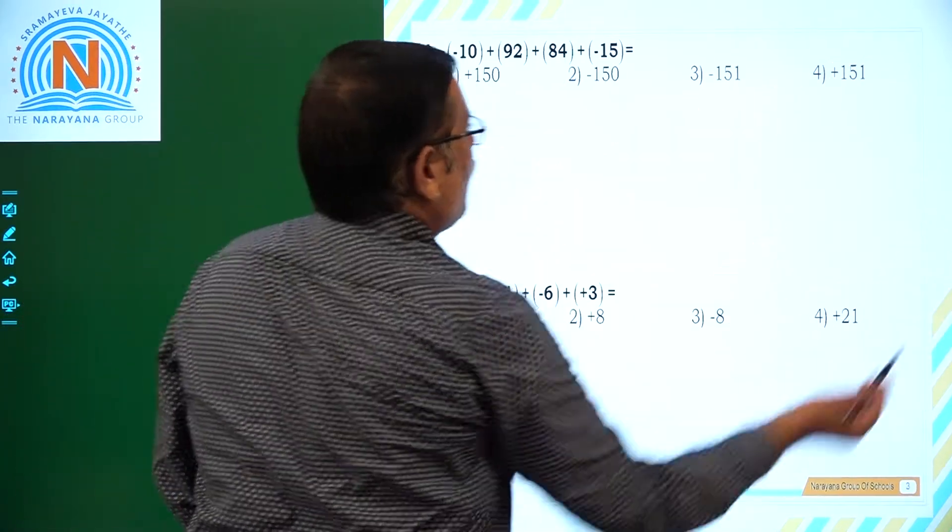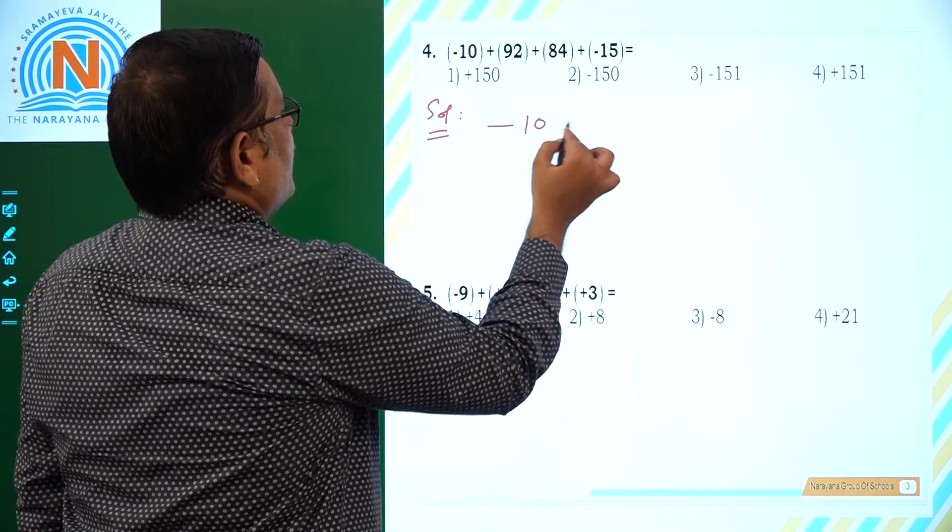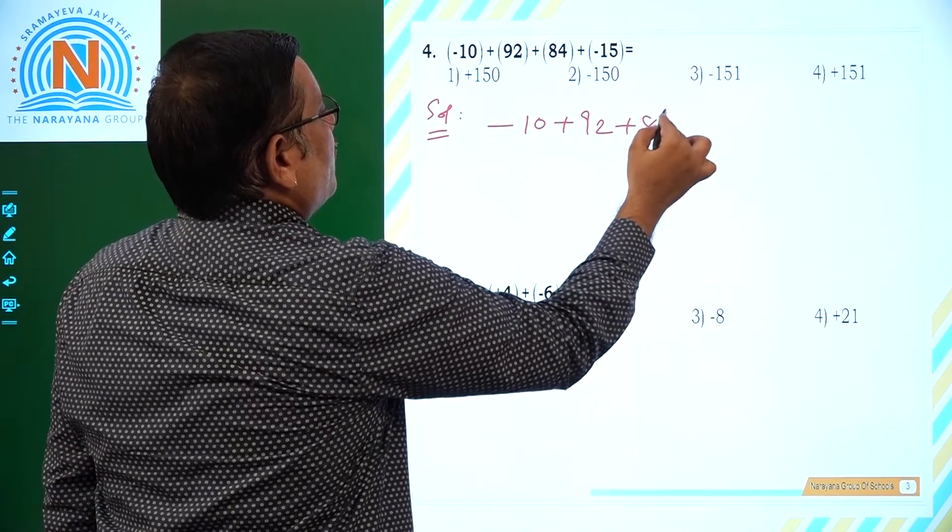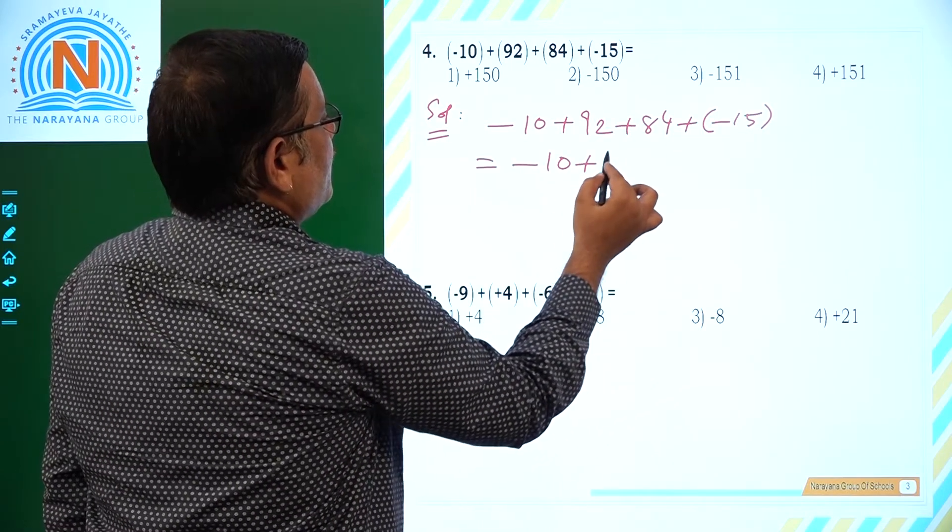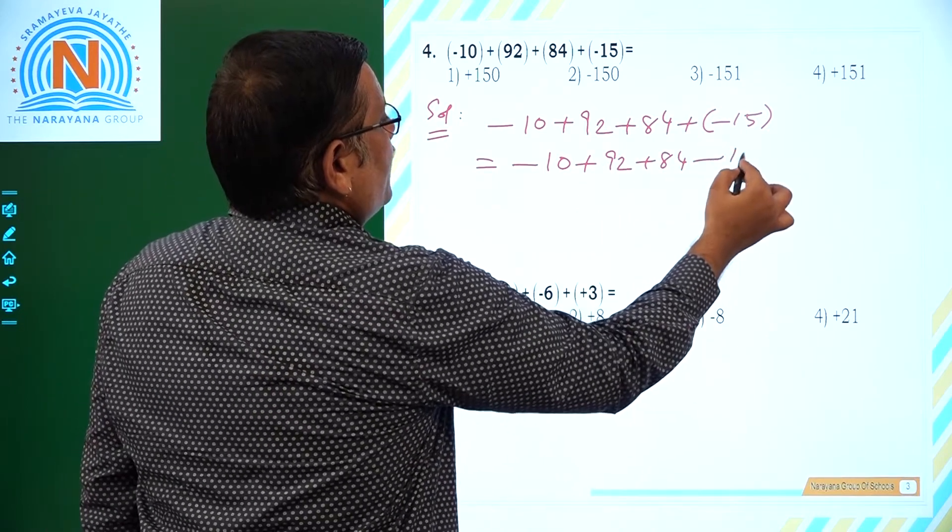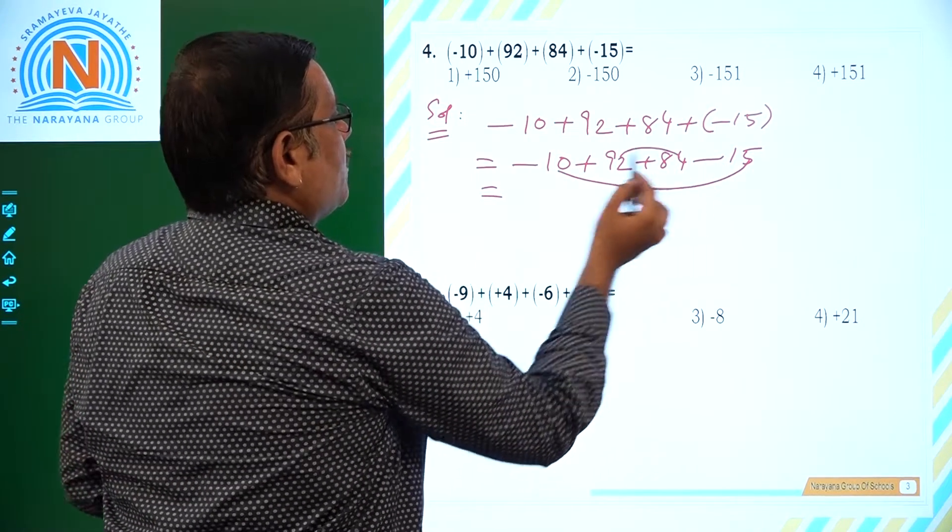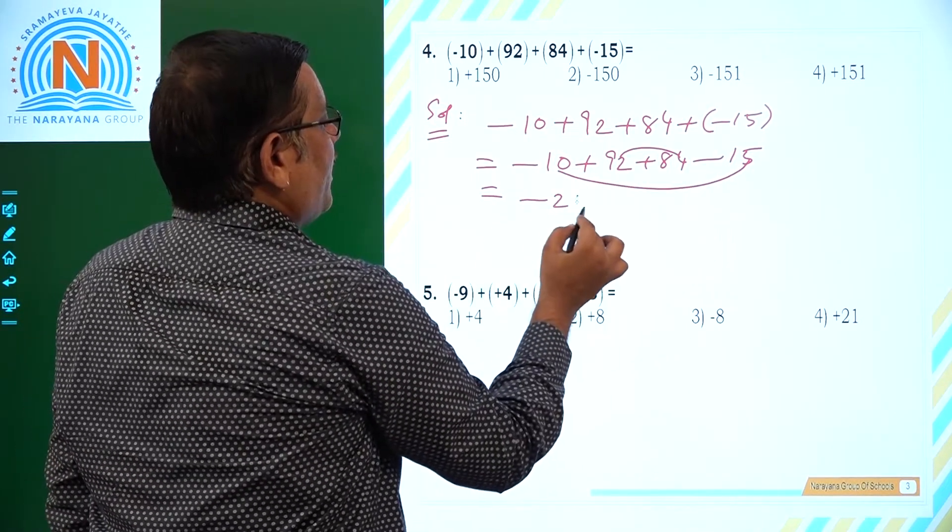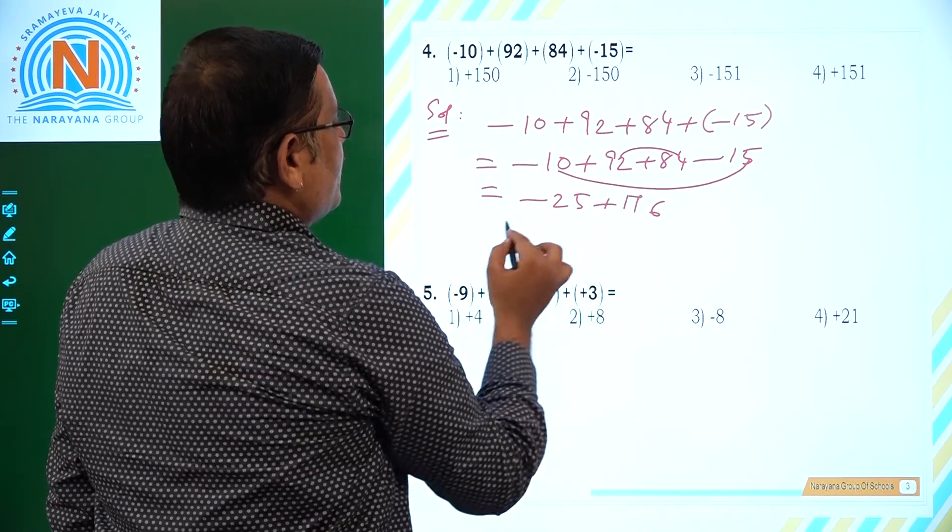Now, let us see the next question. -10 + 92 + 84 + (-15). Plus minus is minus. So, minus 25 plus, add up these two, 84 + 92, 8 plus 9 that is 176.